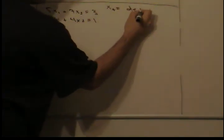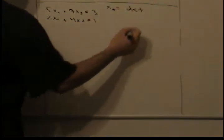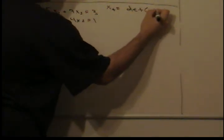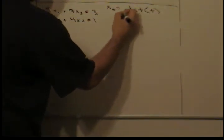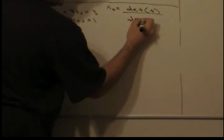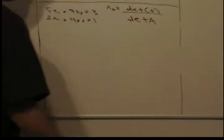So we have the system of equations. If you write this in matrix form, it looks like 5, 7, 2, 4, times x1, x2, equals 3, 1.